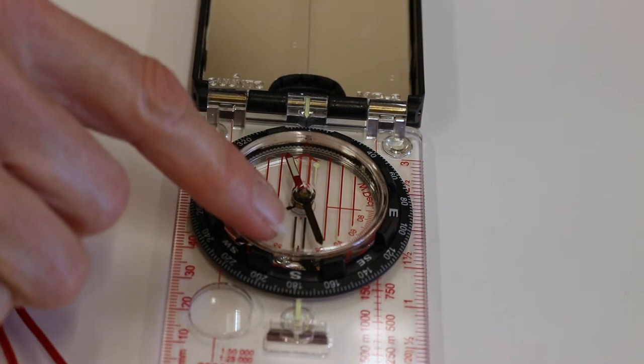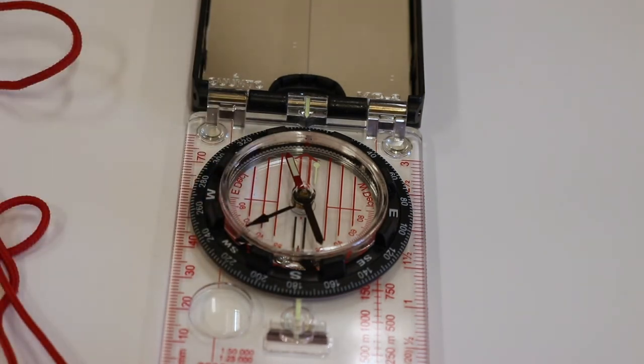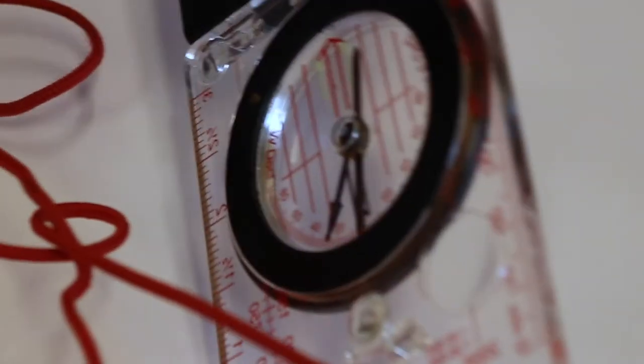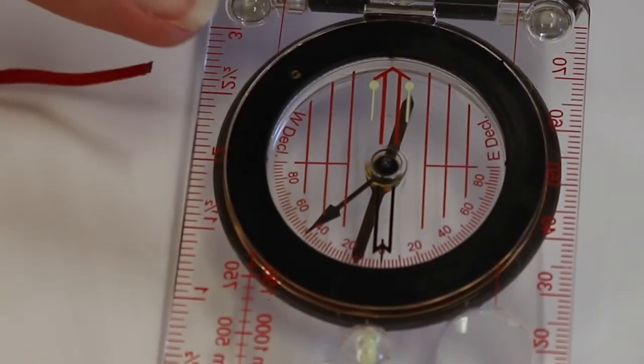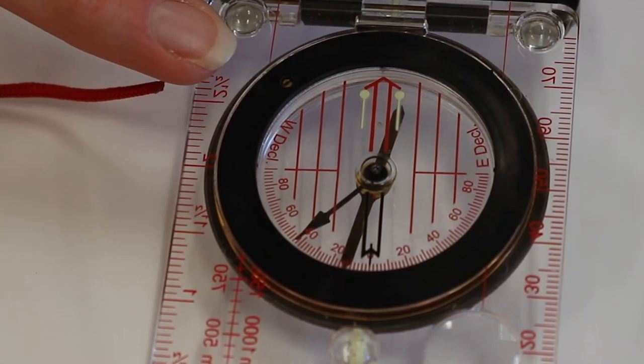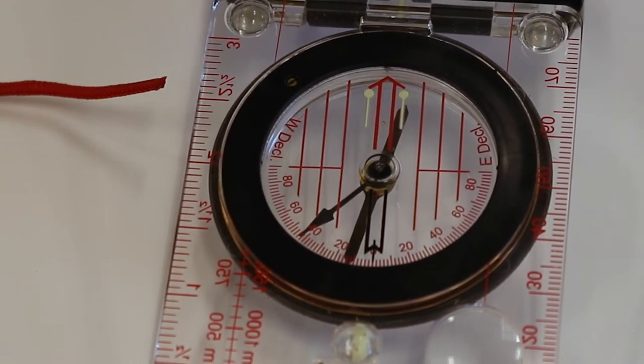An adjustable declination arrow lets you adjust declination to your current location. There is a screw or other mechanism, usually on the underside of the compass, that allows you to rotate the radiated face of the compass to match the current declination for a particular area.